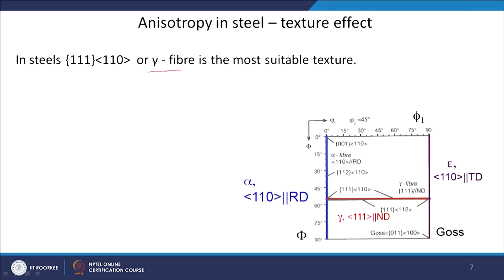For formability, the gamma fiber is the most suitable texture. It lies in the 45-45-45 degree section of the ODF, which is basically 111 plane parallel to ND. You can have different directions along this fiber — starting from 111/110 to 111/112. The 111 parallel to ND is the component needed for good formability in steels. If you have this, you will have lower planar anisotropy, which is good for earring behavior.